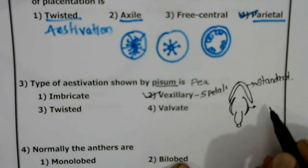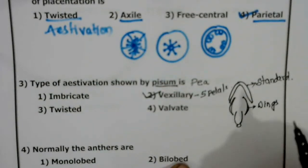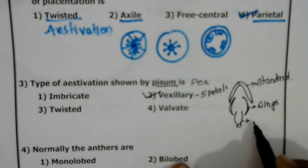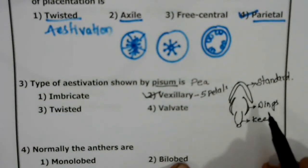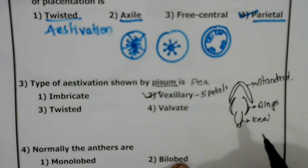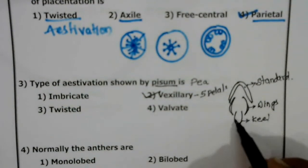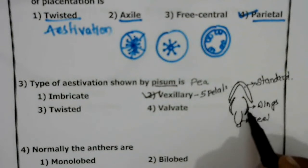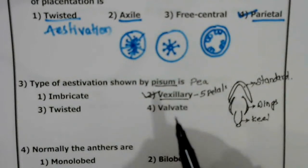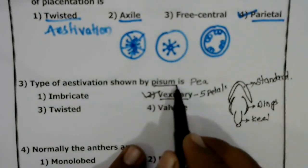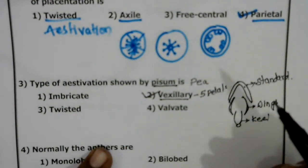There are two smaller petals called wings, and two even smaller ones called keels. The standard covers the wings and keels — the standard is completely outside, the keels are completely inside, and the wings are partly in and partly out. Such aestivation is called vexillary aestivation, seen in Pisum, which belongs to the Fabaceae family.